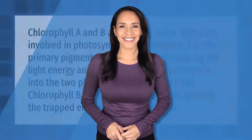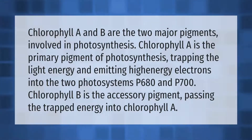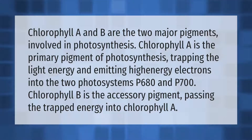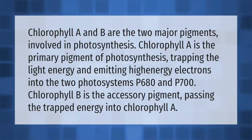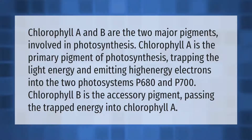Chlorophyll A and B are the two major pigments involved in photosynthesis. Chlorophyll A is the primary pigment of photosynthesis, trapping the light energy and directing energy electrons into the two photosystems P680 and P700. Chlorophyll B is the accessory pigment, passing the trapped energy into chlorophyll A.